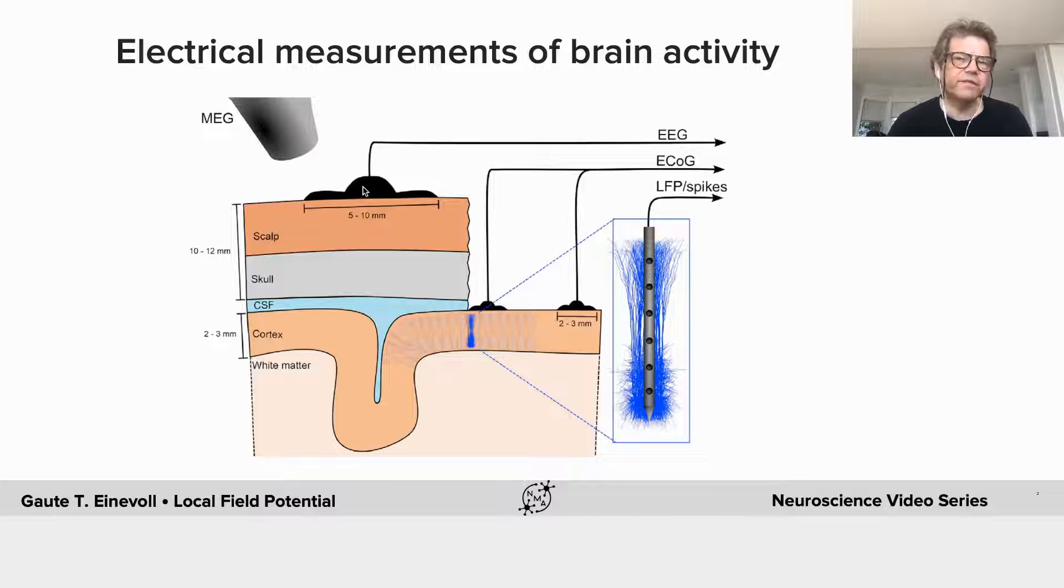If you put the electrode on the scalp, that's called an EEG recording. If you put it on the cortical surface, it's called an ECoG recording. Or if you have an electrode inside the population, you can measure something called the spikes, but also what's called the local field potential.